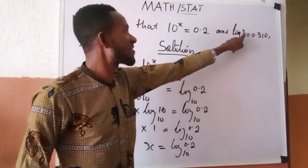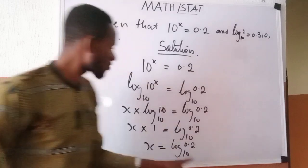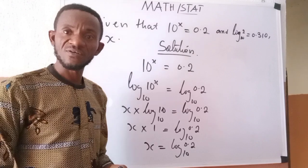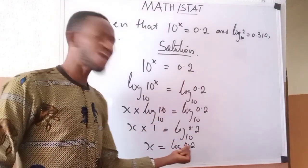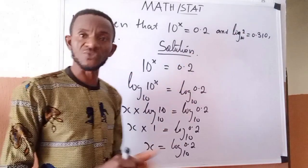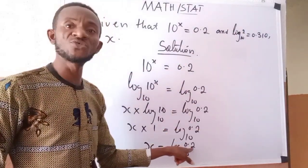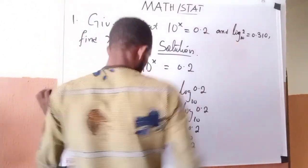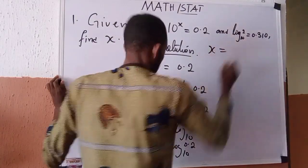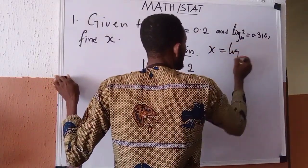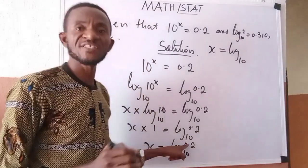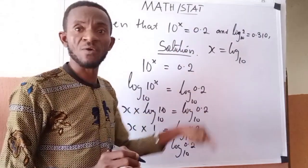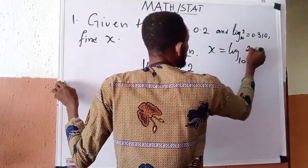We are given log of 2 base 10, but what we have here is log of 0.2 base 10. The next task is to convert 0.2 in order to have something that looks like 2. We know that 0.2 can be changed into a fraction. Converting 0.2 into a fraction gives 2 over 10. So x equals log of (2/10) base 10.